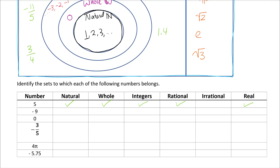Negative nine is not a natural number because it's not positive, and not a whole number because it's not zero or positive. But it is an integer because it's a negative whole number. All integers are also rational because they can be written as fractions, and every number we're dealing with today is real.